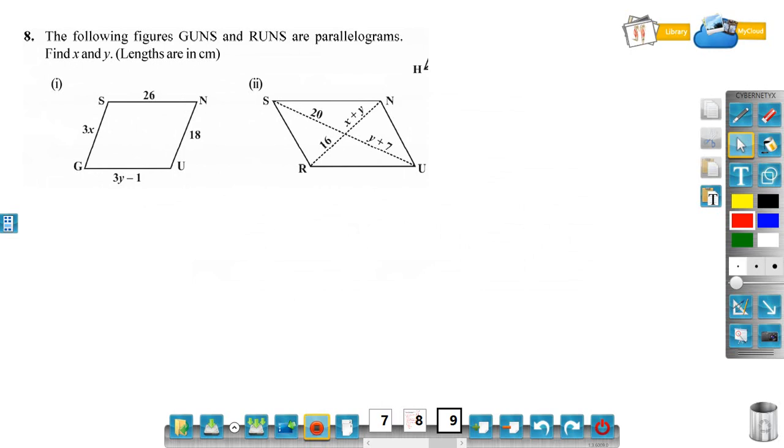Now see here, GUNS is a parallelogram. GU is equal to 3y minus 1, UN is equal to 18, SN is equal to 26, and SG is equal to 3x.